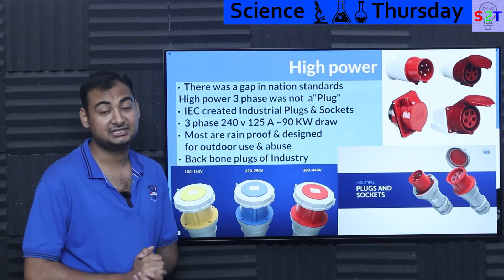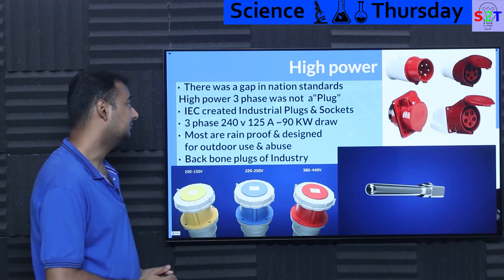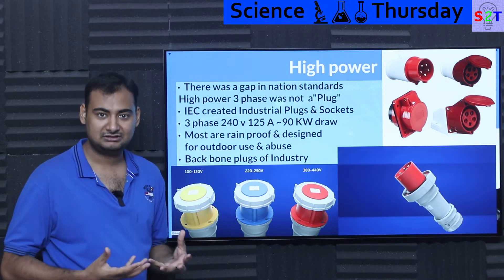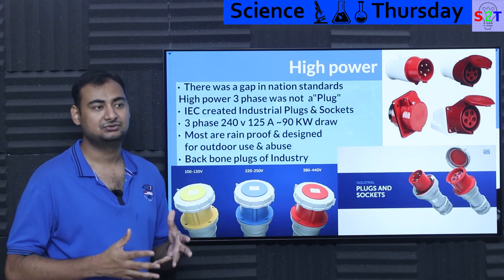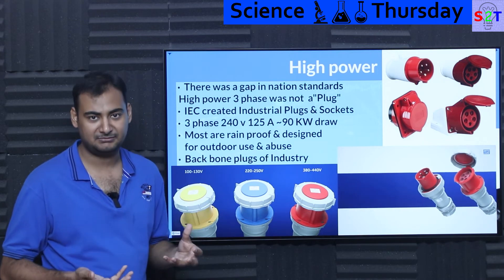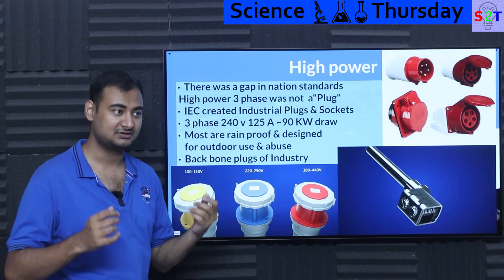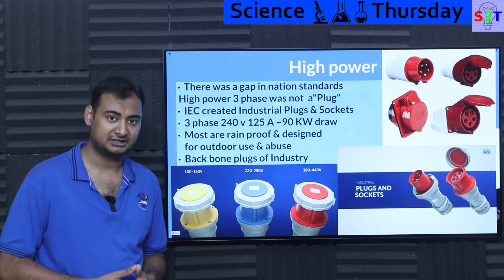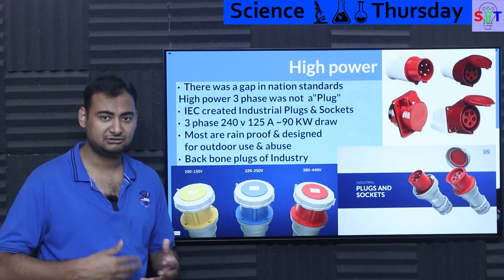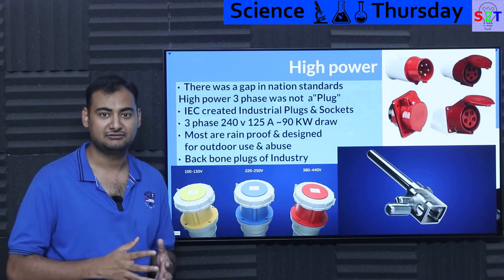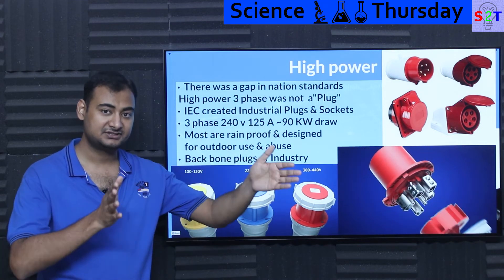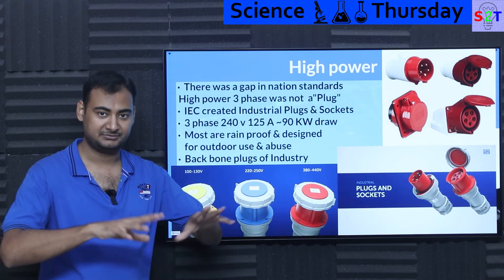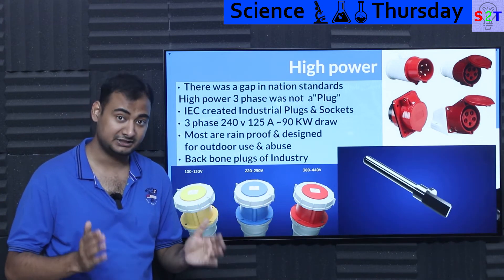The biggest IEC success story is high-power connectors. There was a gap in national plug standards because we got electricity before we got plugs. Back in the early 1900s, electricity was expected primarily for lighting — which was permanent hardware, not something you plug and unplug. Then came water pumps and AC units, all designed for hard wiring. So there was a gap: everybody was using electricity but plugs came later and were not standardized.